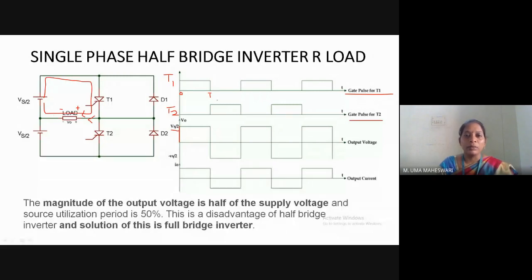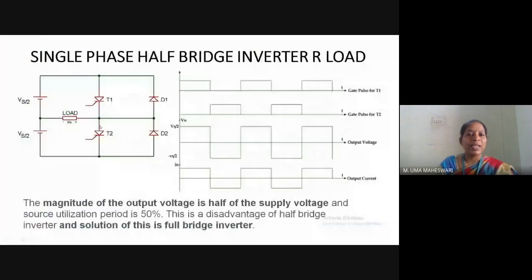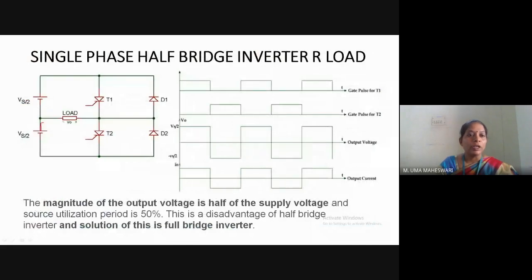During the period from T1 to T2, thyristor T2 is given the gating pulse and the gating pulse for T1 is removed. During the T2 conduction interval, current flows from the positive terminal through the load through the thyristor to the negative terminal, which is opposite to the assumed positive polarity. The output voltage is negative, equal to minus Vs/2, and the output current is minus Vs/2 divided by R.